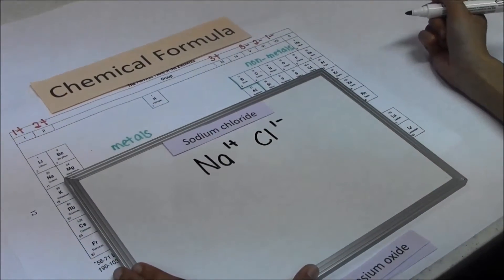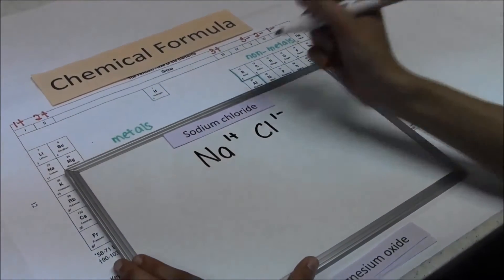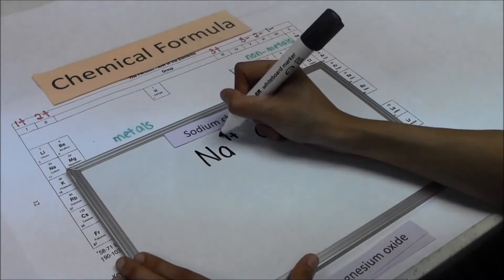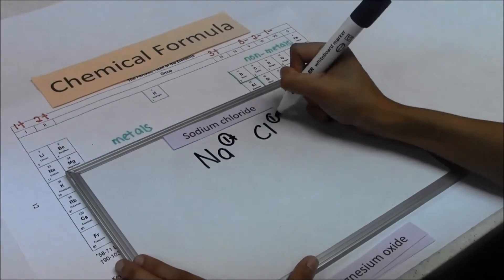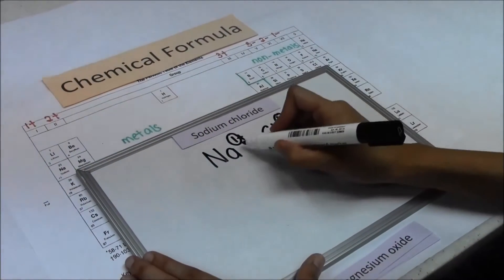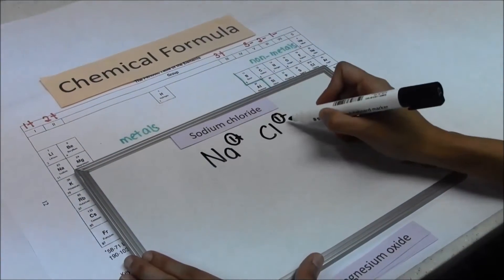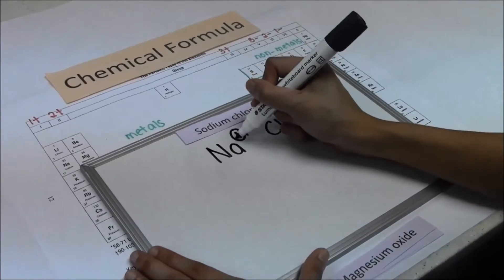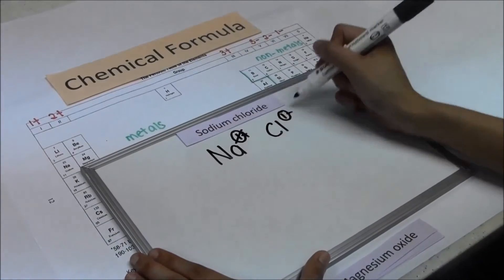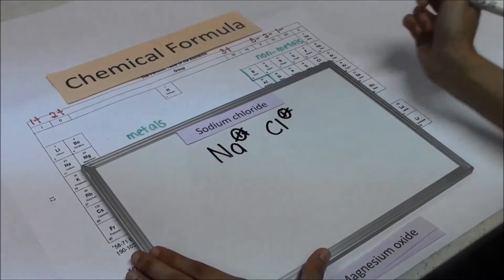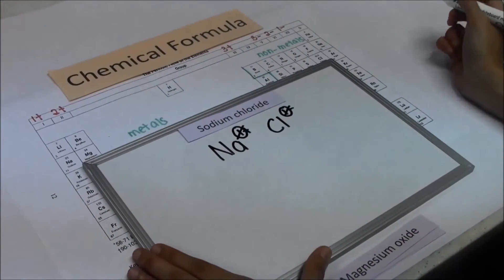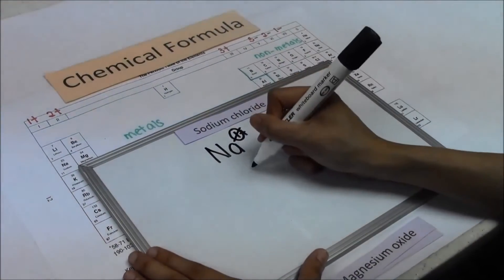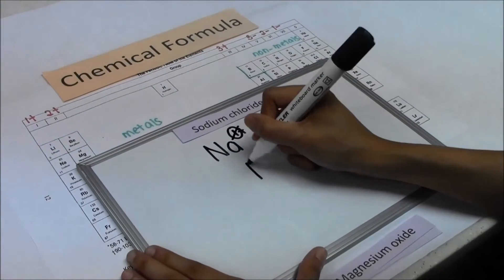Circle the number on the charge. If the numbers are the same, you can cancel. So the chemical formula for sodium chloride is NaCl.